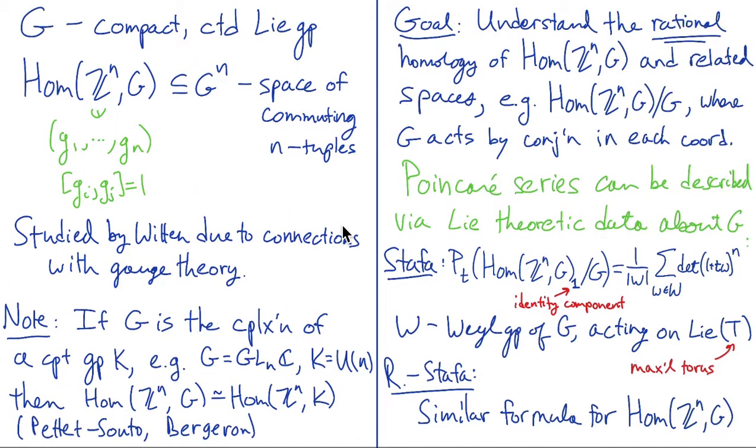So the goal for today is really to understand the rational homology of these spaces and of some related spaces, related spaces like the conjugation quotient. So here I've taken the quotient by the action of G where the Lie group G is just conjugating an n-tuple.